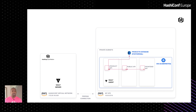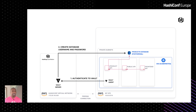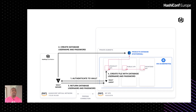The first thing we need to do is authenticate to Vault, and the Vault agent takes care of that by speaking directly to Vault. Once authenticated, Vault generates a short-lived credential for the Postgres database. It returns that credential to the Vault agent, which writes it to a file accessible by the actual API that needs the credential. That's the general workflow.